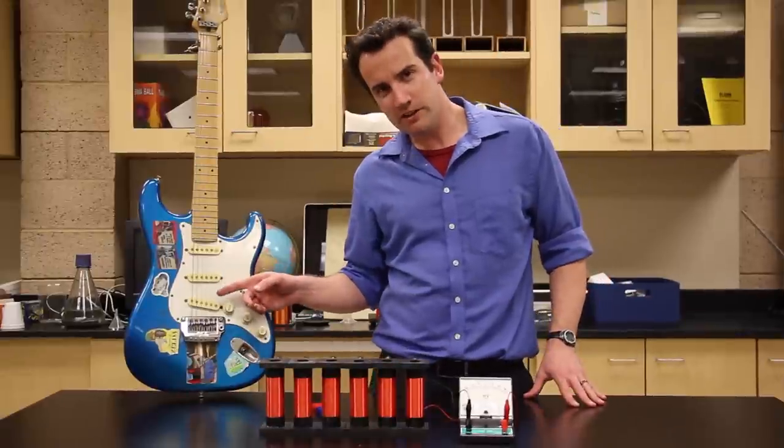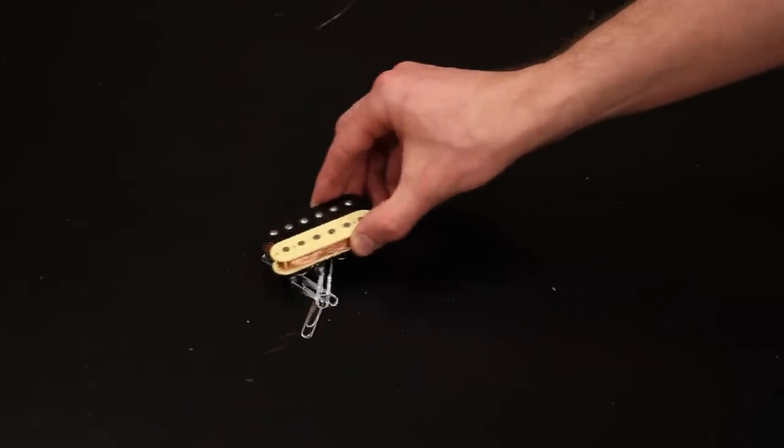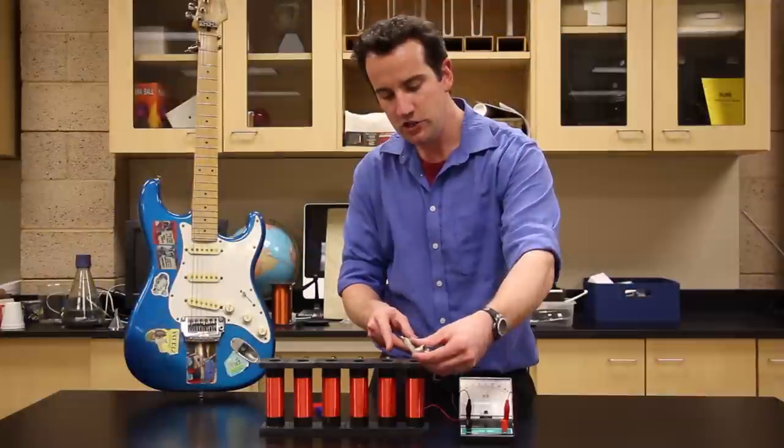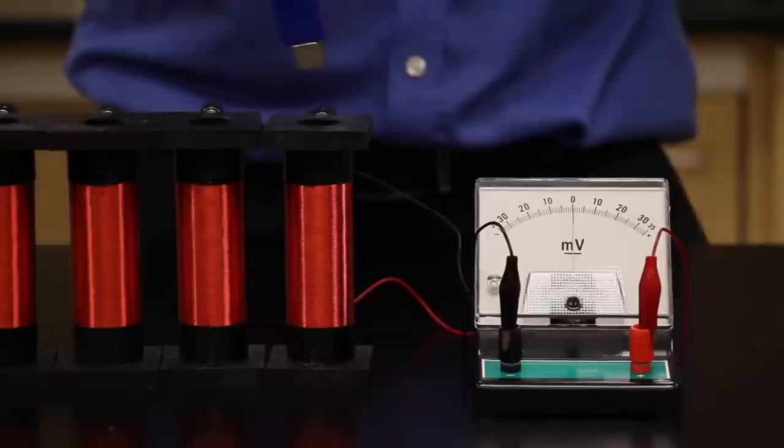The pickups on a guitar are actually magnetic cores that are surrounded by copper coil. And each of them magnetizes the string on top of the coil. And the vibrations of those strings, or the movement of any magnet, generates a voltage in the coil loop. That voltage is the signal that gets amplified by the amplifier.